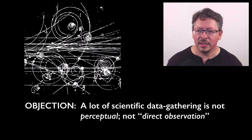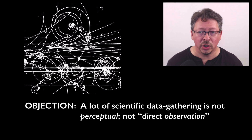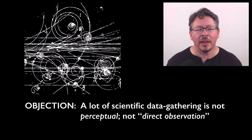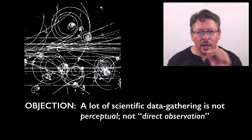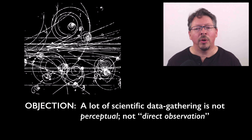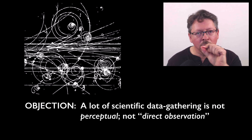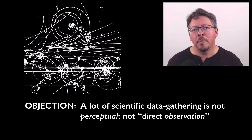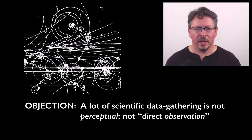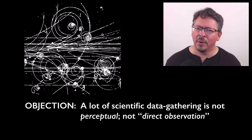Look at this example. These are tracks in an instrument called a bubble chamber. It's used to detect the path of subatomic particles. The chamber is filled with a superheated fluid. The lines that you see are actually trails of tiny bubbles that are created when a particle moves through the fluid. You can learn a lot about the properties of the particles by the paths they make. But it's a stretch to say that you're observing the particles, certainly not directly.